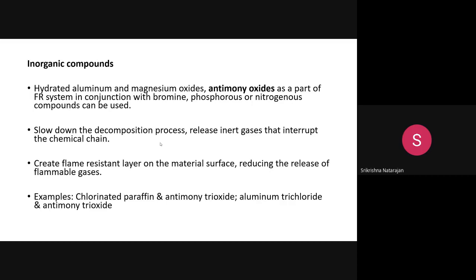Other examples of inorganic compounds include chlorinated paraffin, antimony trioxide, and aluminium trichloride. In all these chemical structures, you will observe nitrogen percent, phosphorus percent, or nitrogen along with chlorine or bromine — that kind of chemistry will be present, giving a semi-durable type of finish.